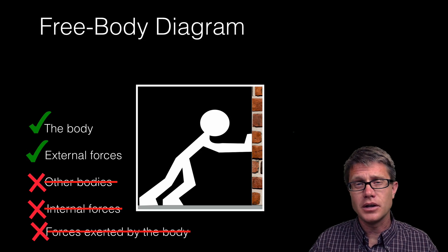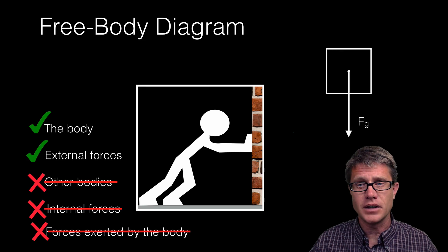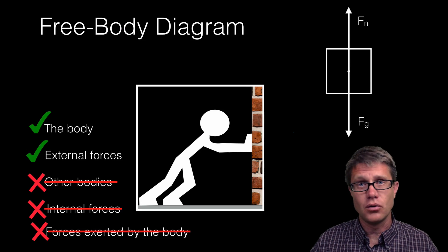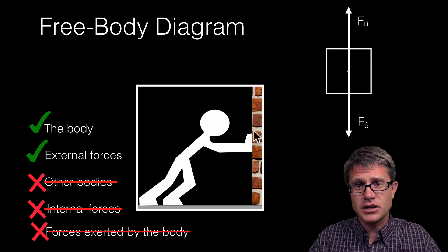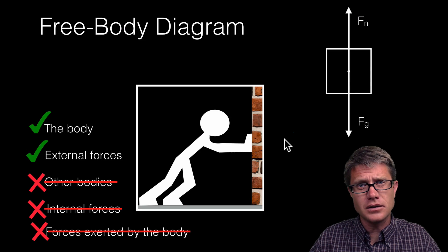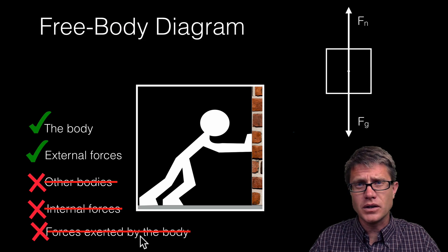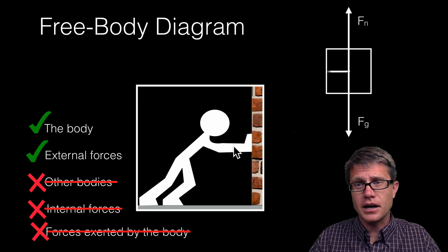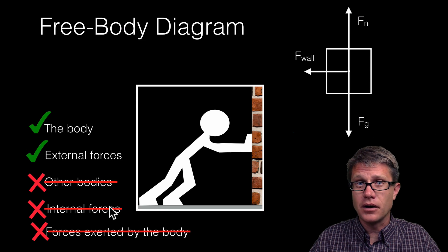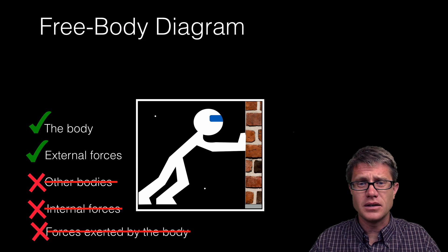Now let us look at the person pushing on the wall. Start with gravity pushing down — that is an external force. Then we have the normal force since the person is not moving into the ground. For the wall: you are pushing against it, but that is a force exerted by the body, so we do not include it. We do include the wall pushing back on you. You are also applying a force into the ground, and there is a frictional force in the opposite direction, so there is no net force and no net acceleration.